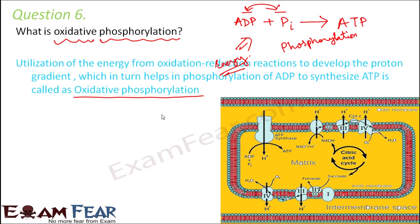While we were talking about photosynthesis, we talked about photophosphorylation, because there also the same process of phosphorylation was happening — a proton gradient developing, ATP synthase getting activated, and ATP molecules being formed by the chemiosmotic hypothesis. The only difference was that there, the energy was provided by sunlight, which is why it was called photophosphorylation.